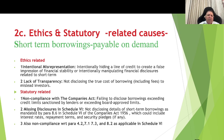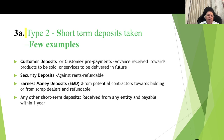Strategy-related causes: Number one — non-compliance with the Companies Act, failing to disclose borrowings exceeding the credit limit sanctioned by lenders or set by board-approved limits. Number two — missing disclosures in Schedule 6, not disclosing details of short-term borrowings as mandated by para 8.6 of Schedule 6 of the Companies Act, which includes interest rates, repayment terms, and security pledges. Number three — other miscellaneous non-compliance as required under paras 4.2, 7.1, 7.3, and 8.2 as applicable in Schedule 6.